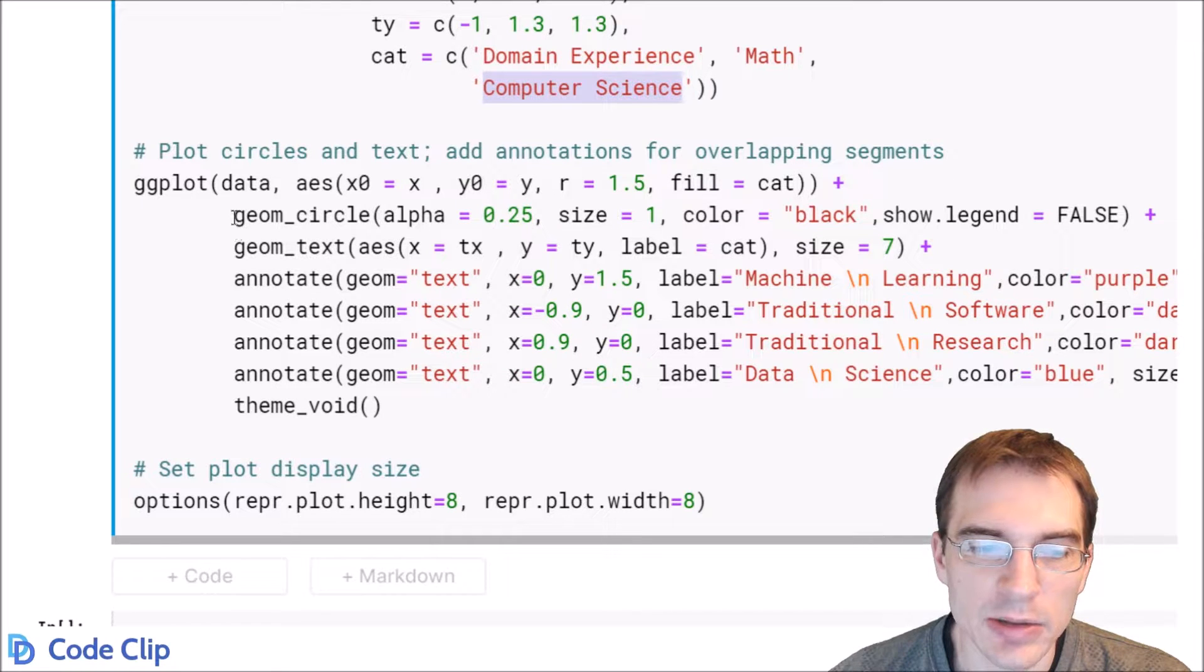And after that, we add on the geom_circle. We're going to add some transparency to the colors. We're setting a size, outline color, and we're going to suppress the legend because this Venn diagram we're making is actually going to have text on all the proper places anyway, so we don't really need that.